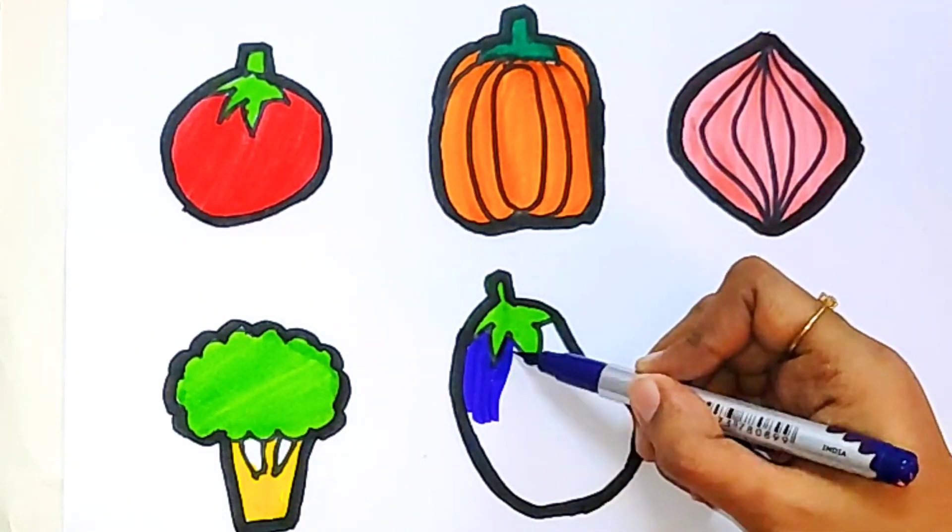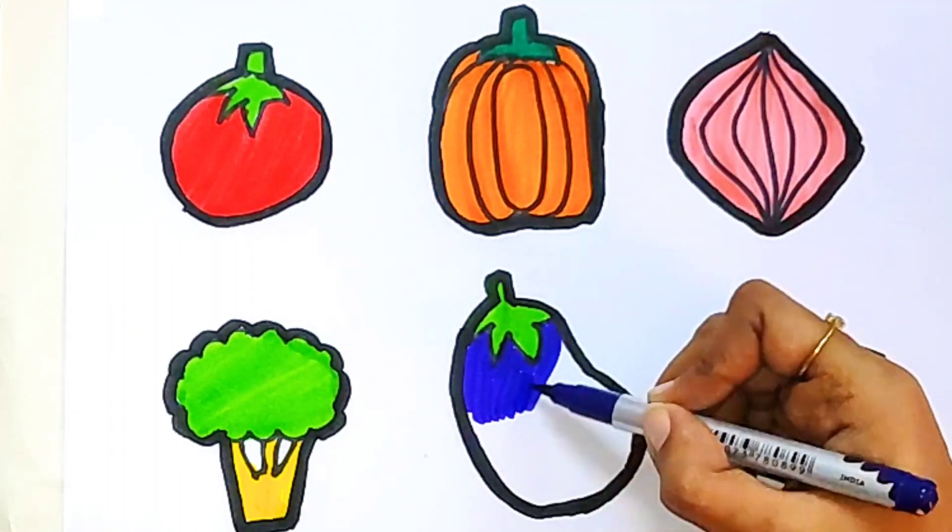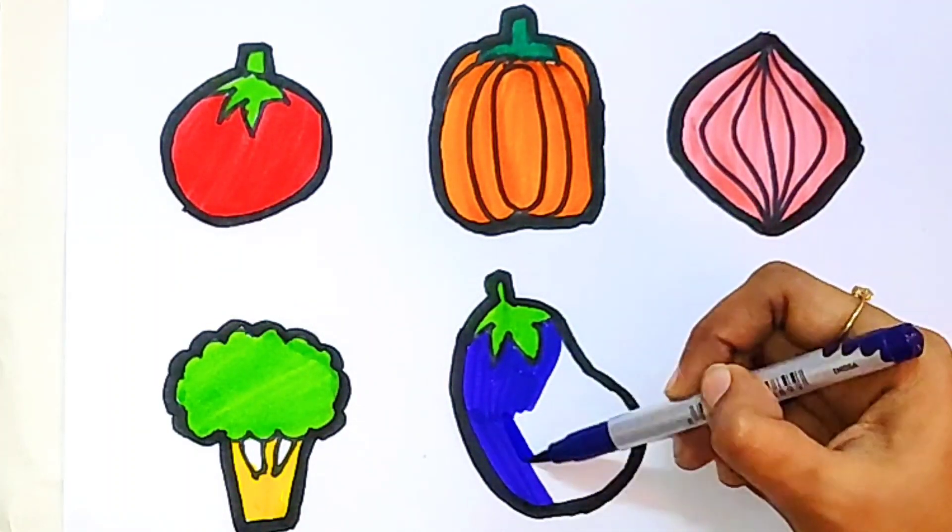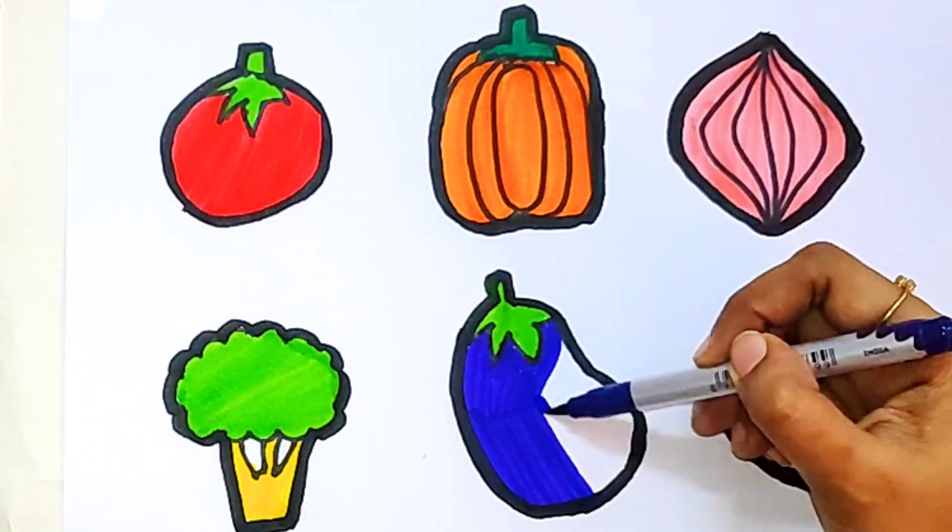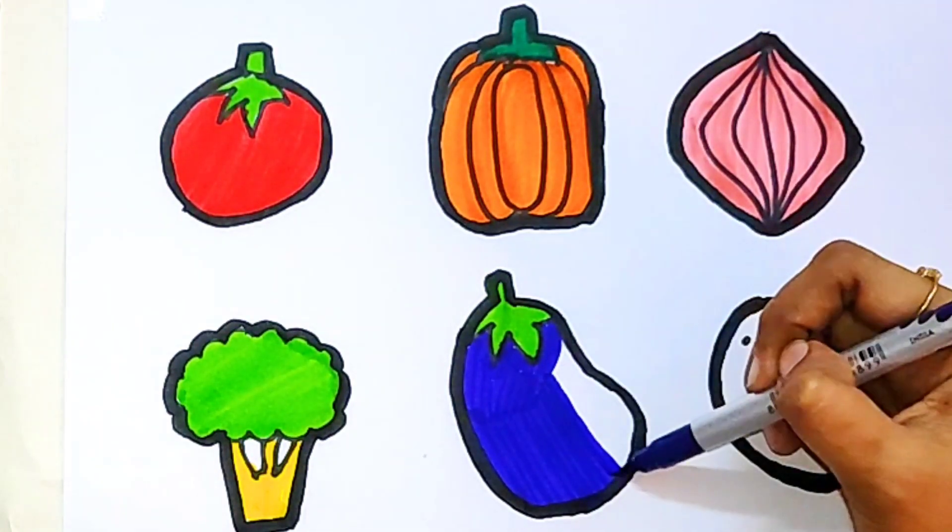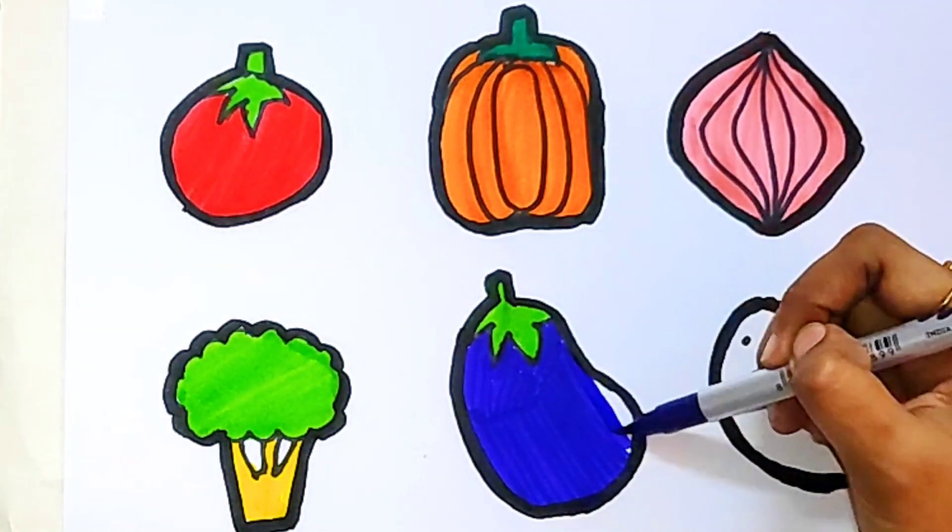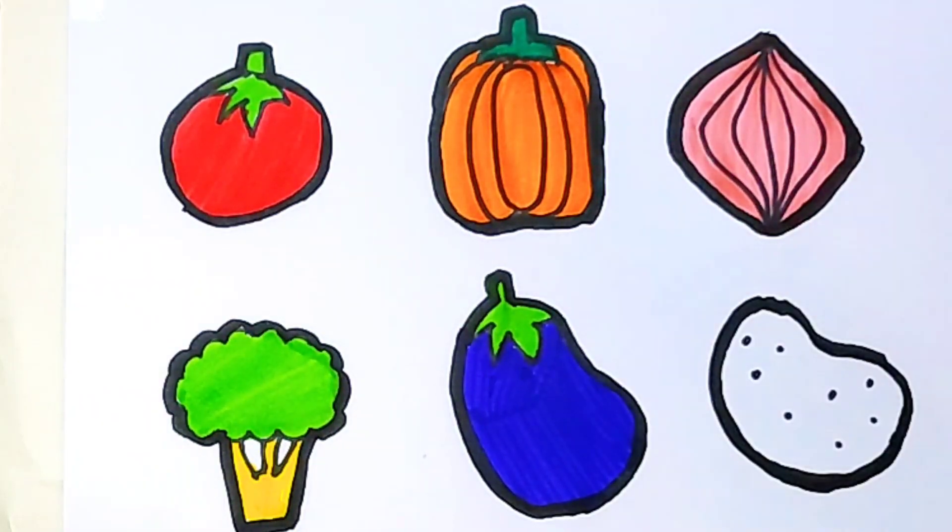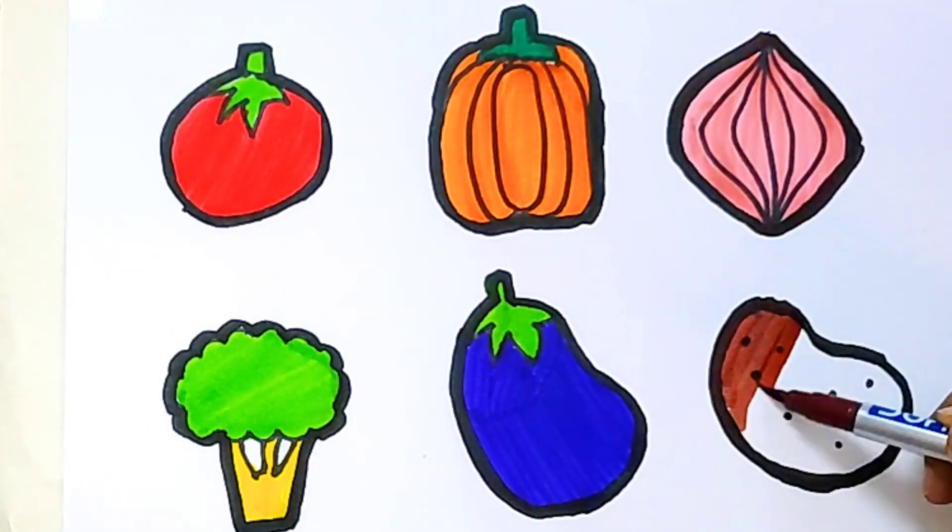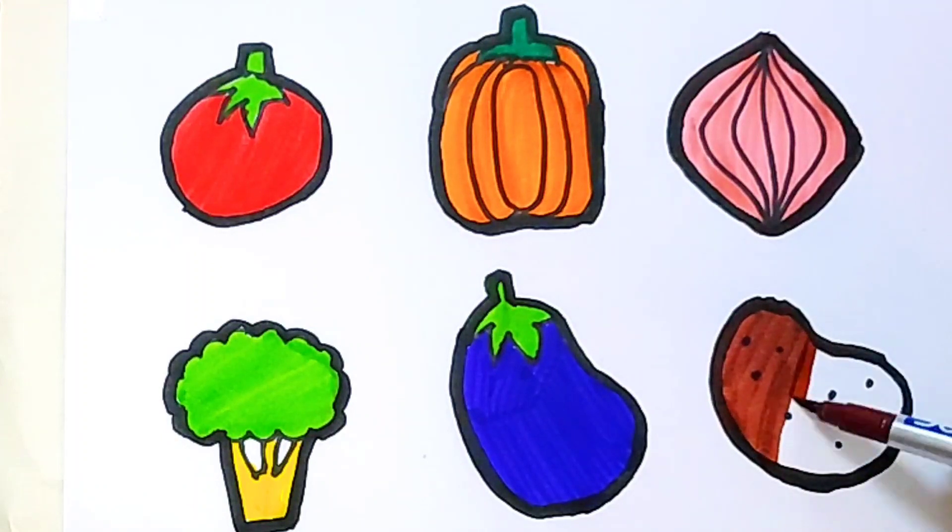This is violet color, violet color for the brinjal. This is brown color, brown color for the potato.